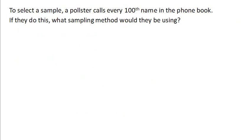So as opposed to select a sample, a pollster selects every hundredth name in the phone book. So this is a method called systematic sampling. And the idea is you take a list and you choose every nth value in the list. In this case, we're taking every hundredth.